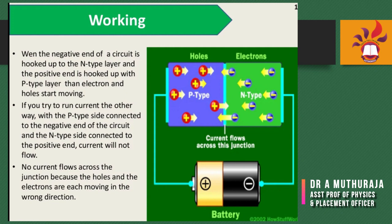The LED working principle is based on the p-n junction structure. When current flows across the diode, negative electrons move one way and positive holes move the other way. All these processes are based on the p-n junction process only — the p-n junction is very important in semiconductor processes.